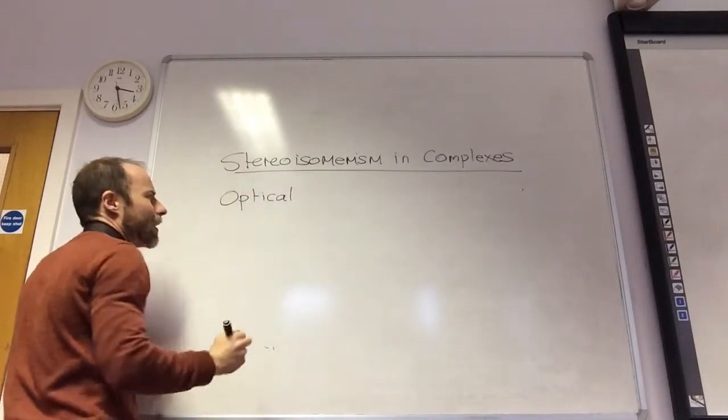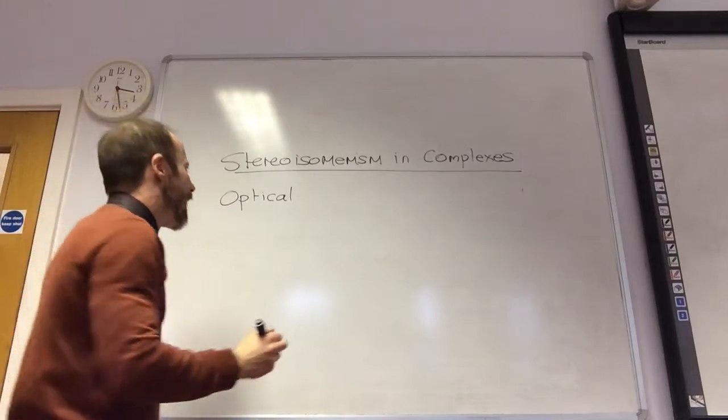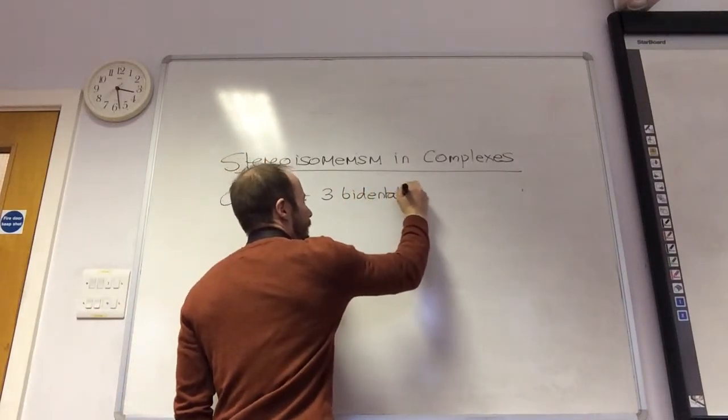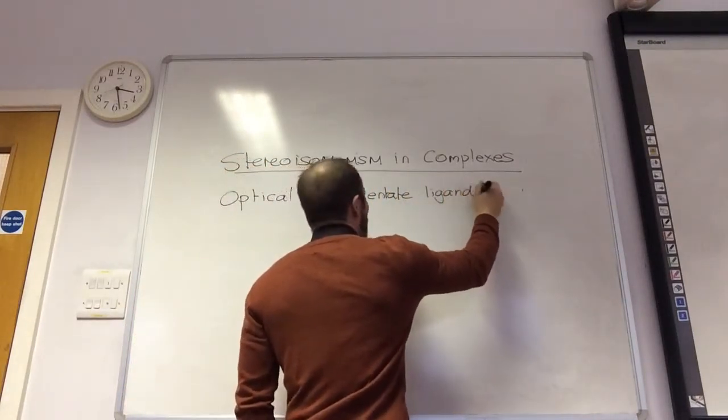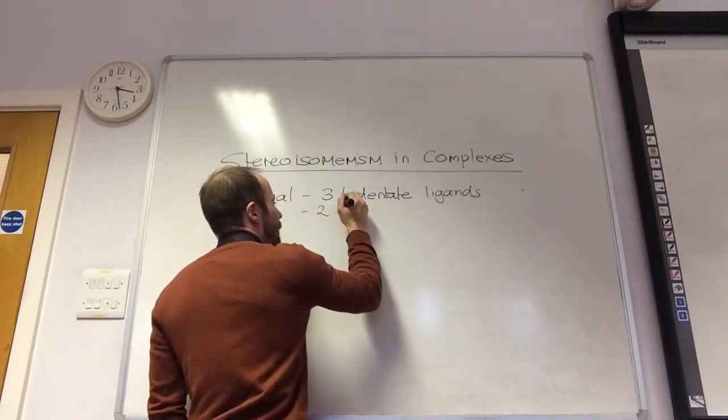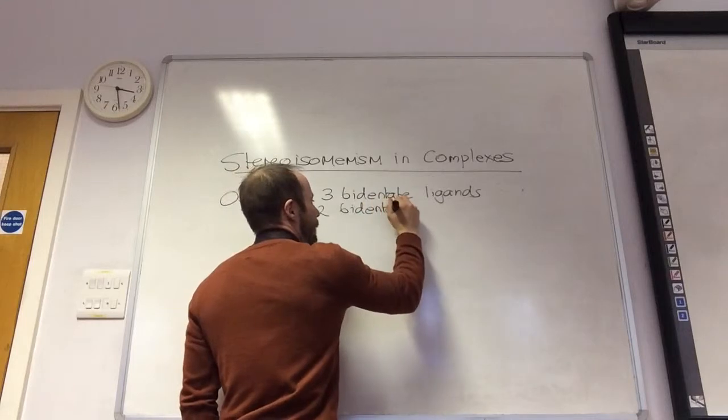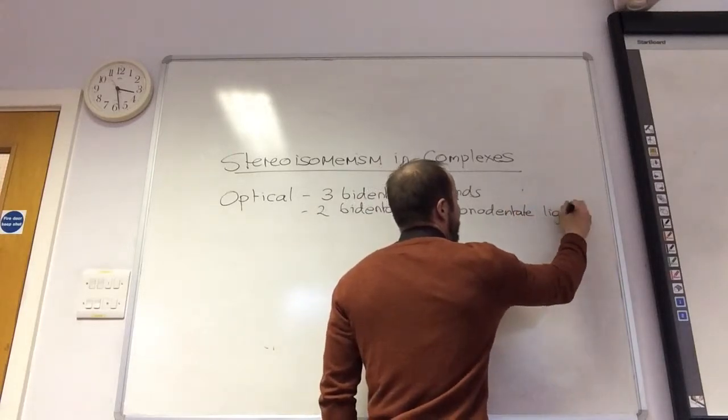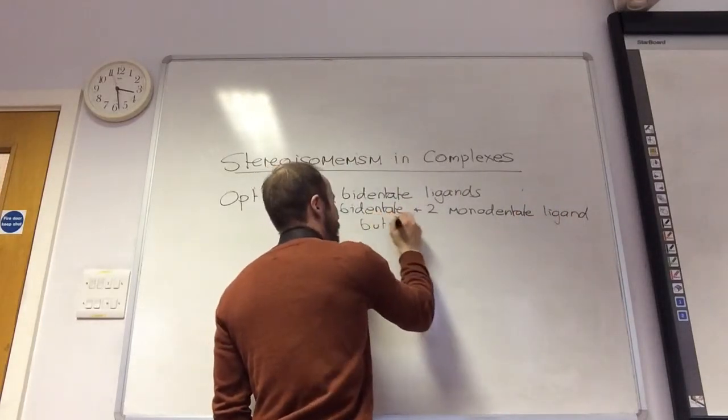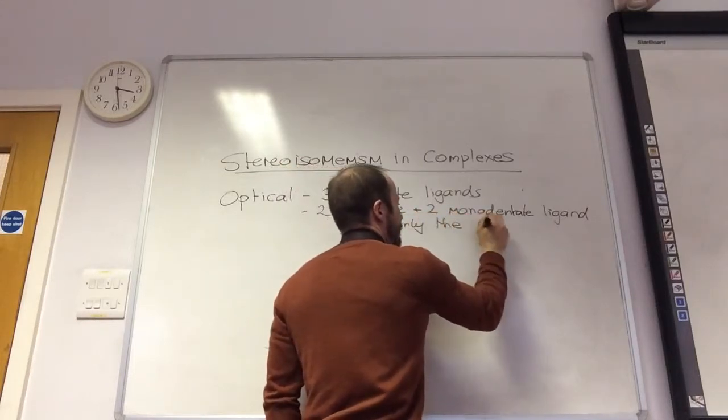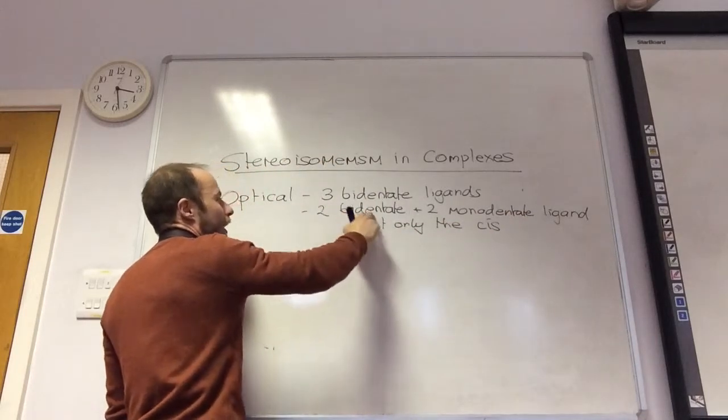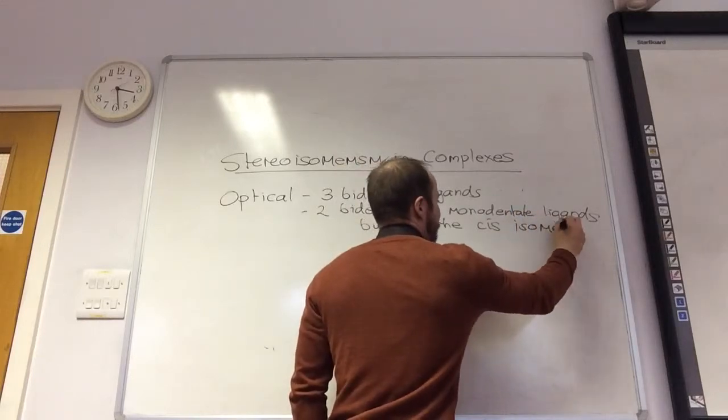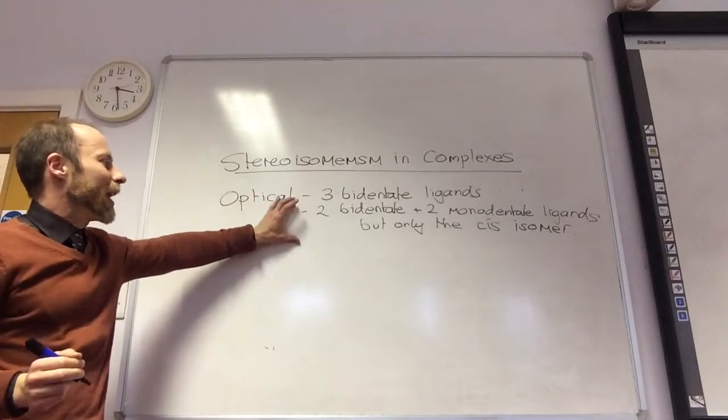For optical, if you've got three bidentate ligands, but also it will work if you've got two bidentate and two monodentate ligands. Two bidentate plus two monodentate ligands, but only the cis isomer. And if I've got those, either that combination or that combination, I see optical isomerism.